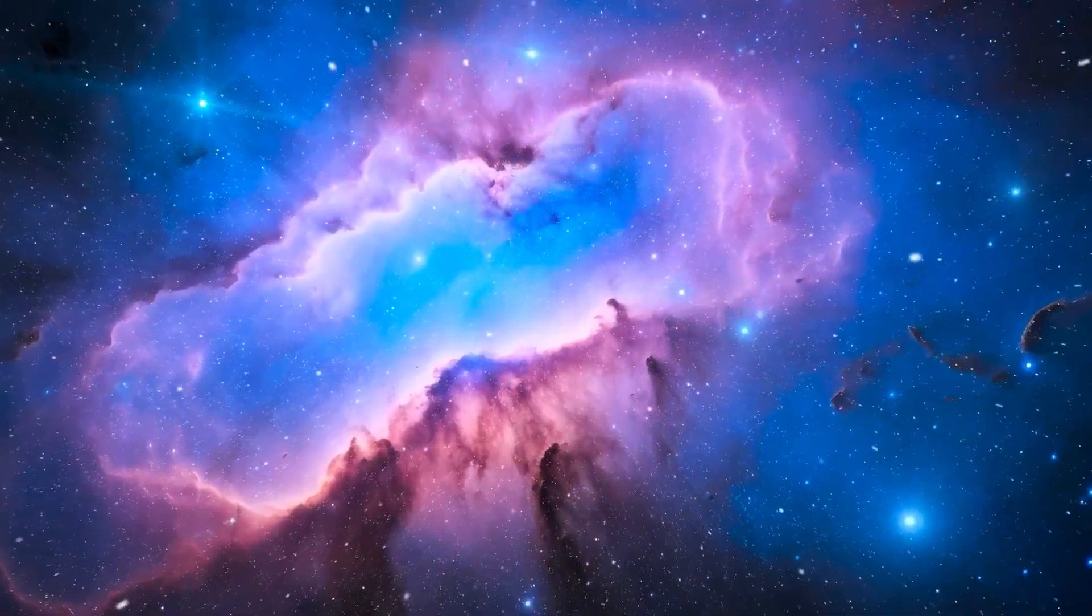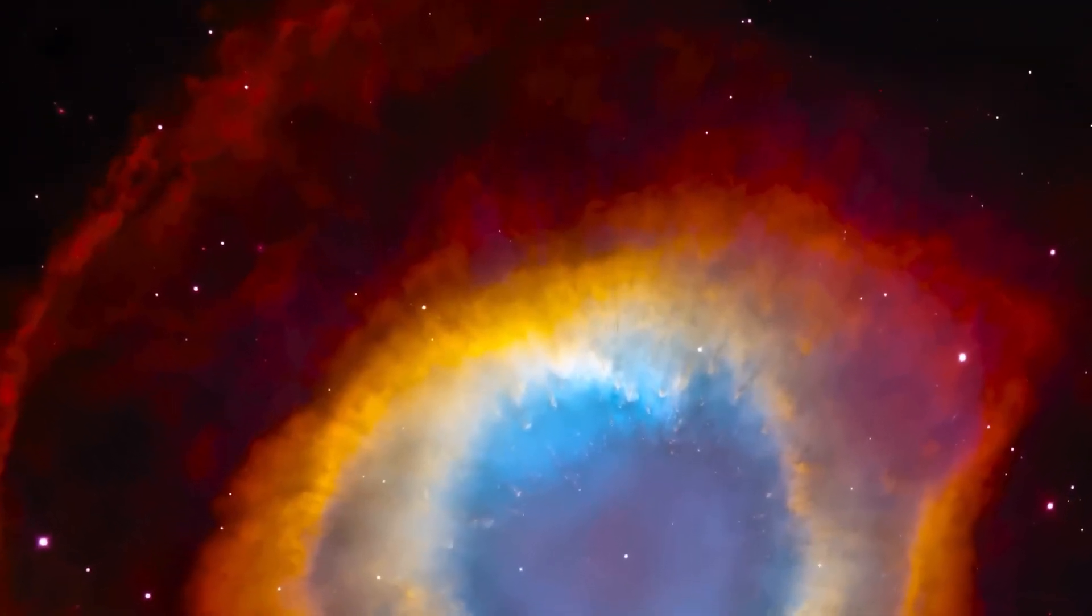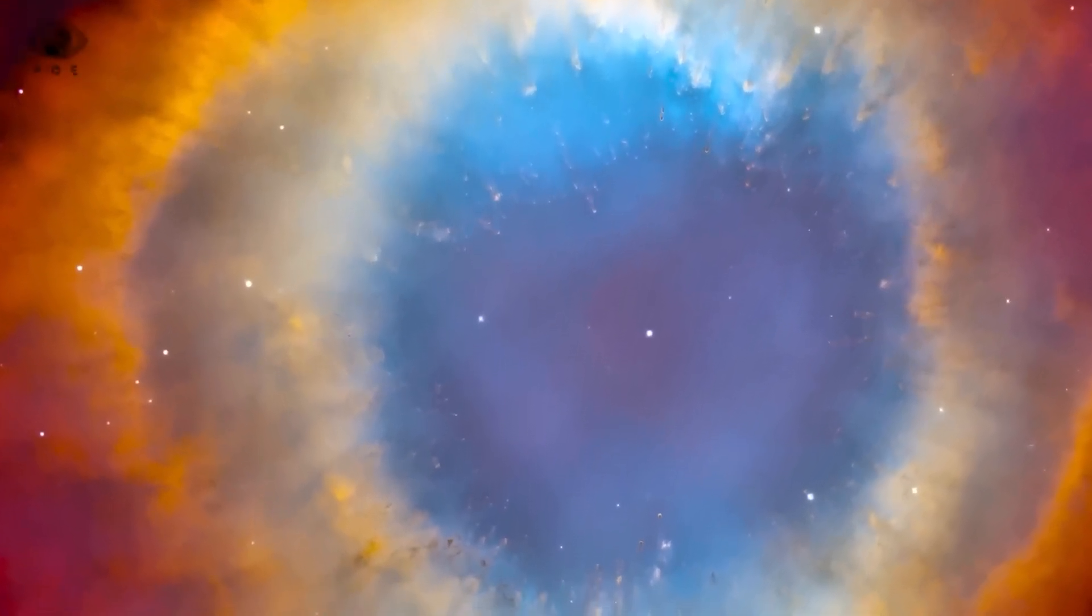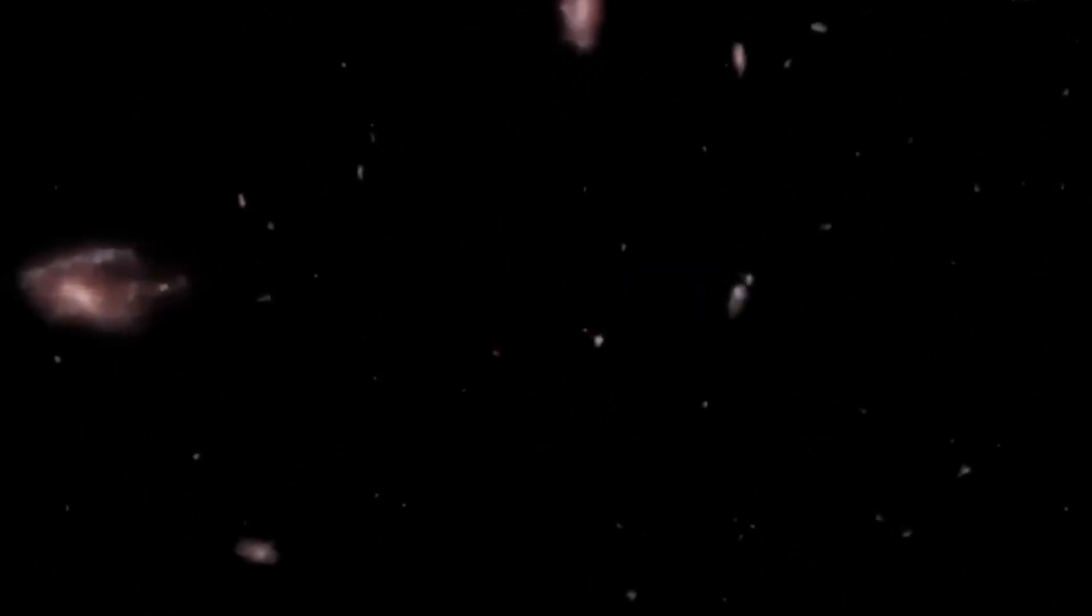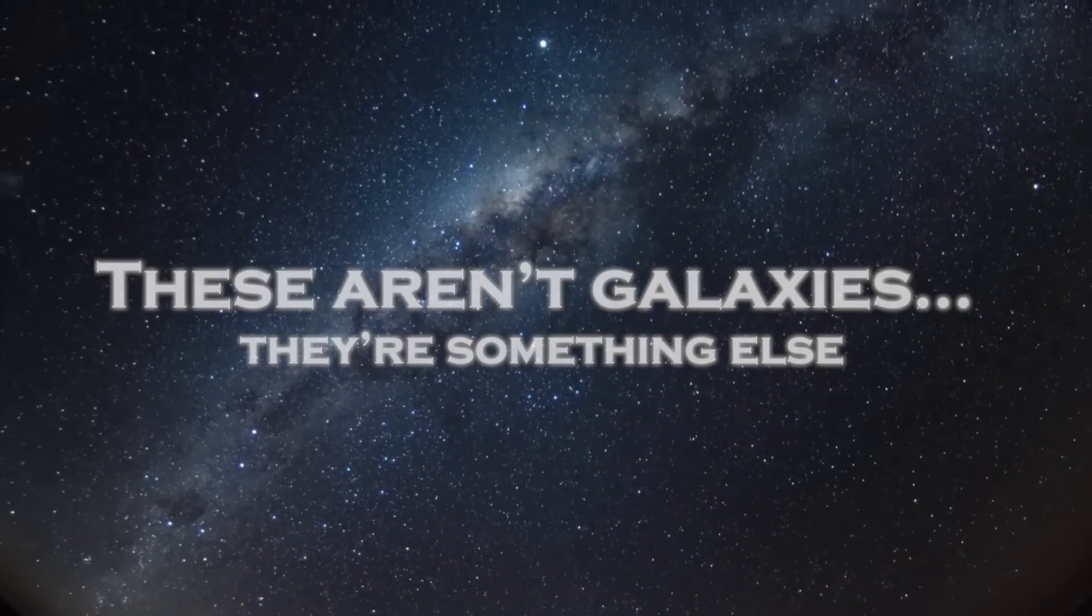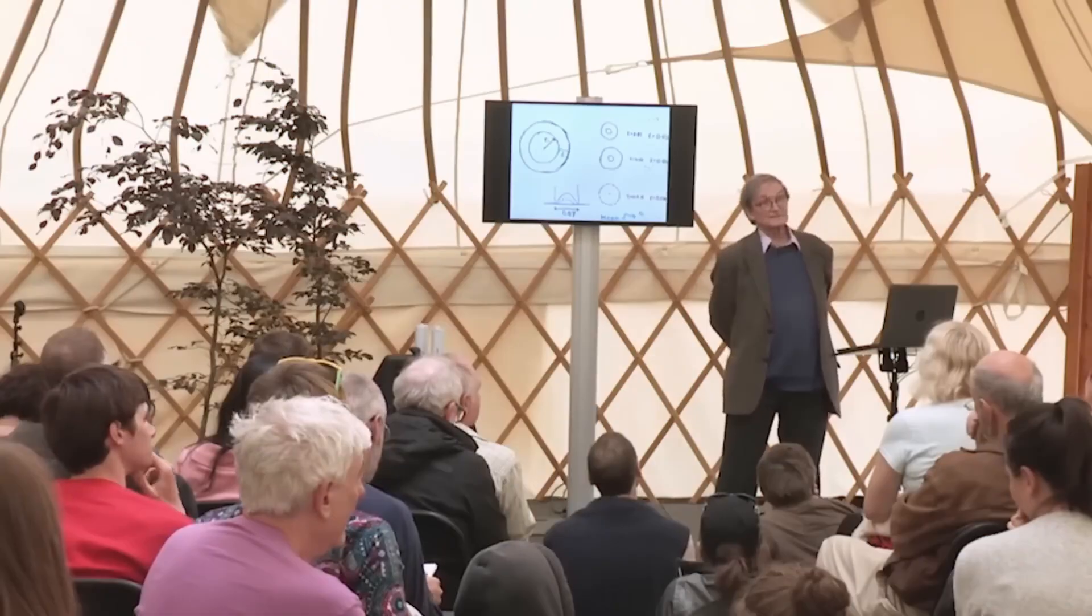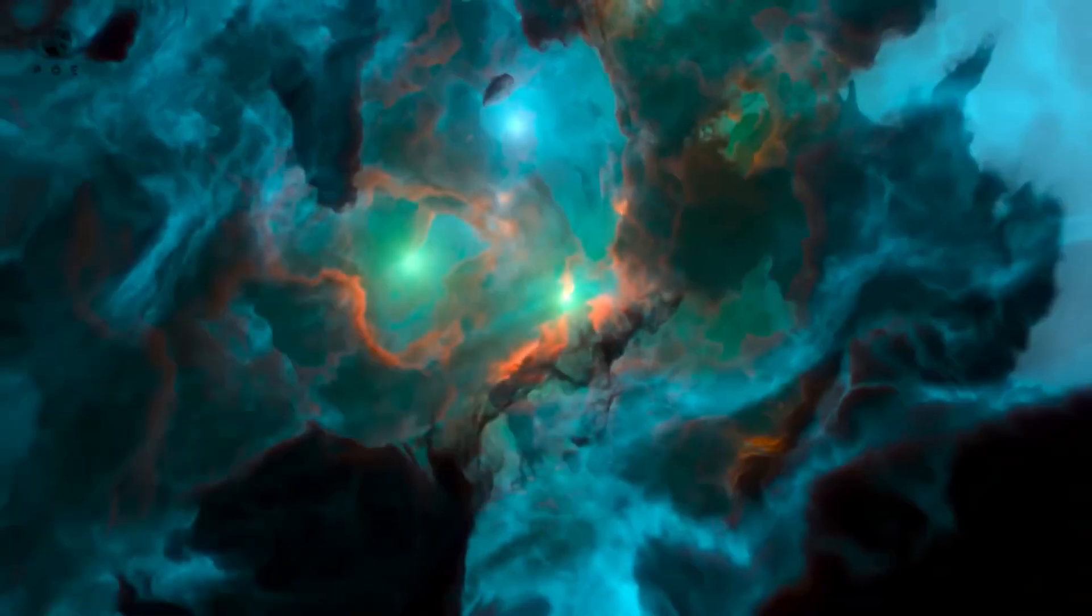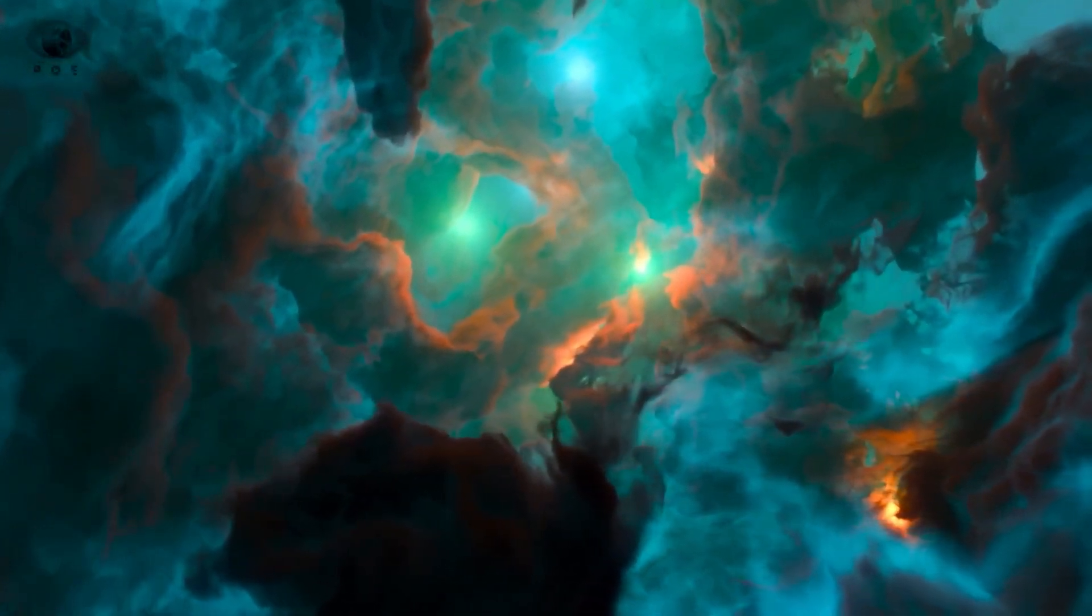Diving deeper, the multiverse beckons. In this vast ensemble, our universe is but one bubble in a frothing sea, each with slightly different laws. Webb's anomalies could be bleed-through, where neighboring realities brush against ours, distorting physics at the edges. Quantum mechanics supports this many-worlds interpretation, where every possibility branches. Perhaps Webb peers into adjacent branches, glimpsing galaxies that evolved under tweaked constants. The fine-tuning problem amplifies this - why are our physical constants so perfectly suited for life? A multiverse answers: we're in the one where it works. But proof? Elusive, yet Webb's data nudges us closer.